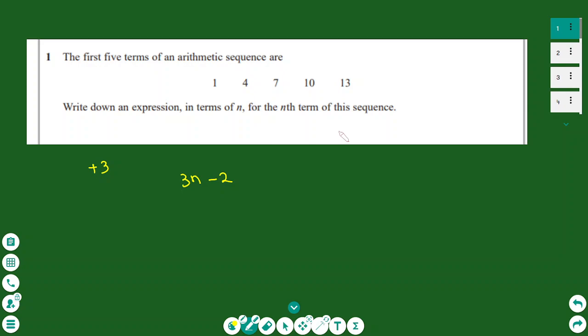The first exercise is arithmetic sequences. I have a set of numbers: 1, 4, 7, 10, 13, and the question asks you to find the nth term. First, see how the numbers change from 1 to 4, 4 to 7 — you notice they change by plus 3. Because they change by plus 3, it means it's a multiple of 3.